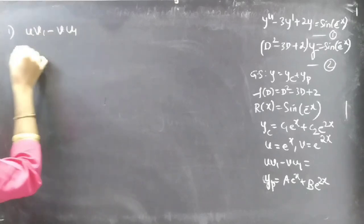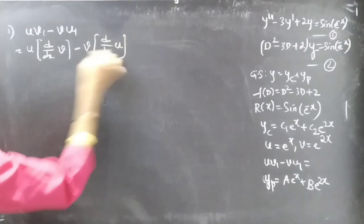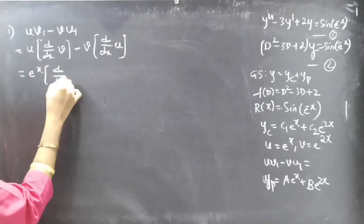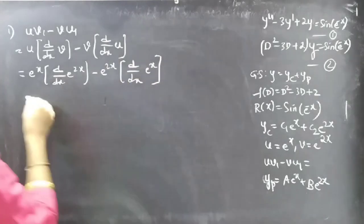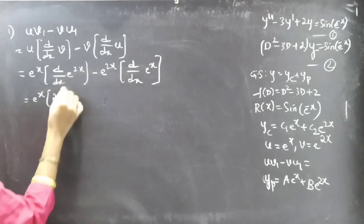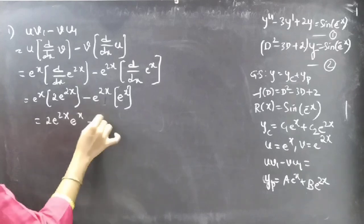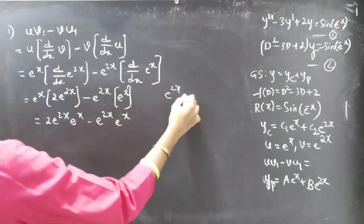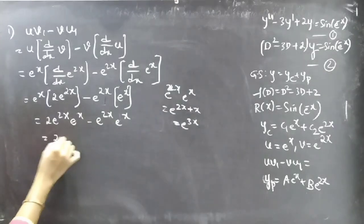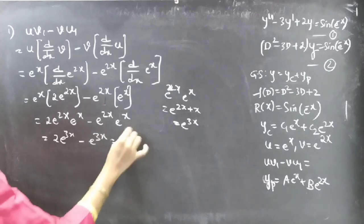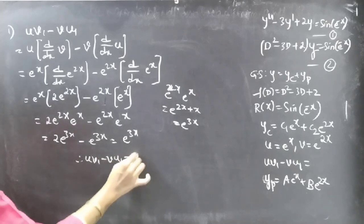Computing u·v' - v·u': this equals u·(dv/dx) - v·(du/dx), where u = e^x and v = e^(2x). So we get e^x·(2e^(2x)) - e^(2x)·(e^x) = 2·e^(3x) - e^(3x) = e^(3x). Therefore, u·v' - v·u' = e^(3x).